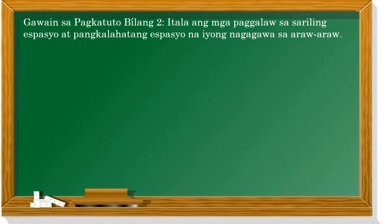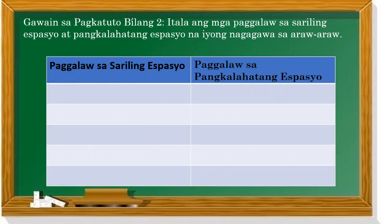Gawain bilang pangalawa: itala ang mga paggalaw sa sariling espasyo at pangkalatang espasyo na iyong nagawa sa araw-araw. Magkakaiba ang ating mga galaw dito. Pwede, halimbawa: pagwawalis ng pasulong, paglalakad ng patagilid, pagtakbo ng patalikod, pagtakbo sa sariling pwesto. Ito, paggalaw sa pangkalatang espasyo: pagtakbo ng malayuan, ng pataas — ibig sabihin, umaalis ka sa pwesto mo. Ang paggalaw sa sariling espasyo at pangkalatang espasyo ay kilos locomotor at di-lokomotor. Ang kilos locomotor ay yung umaalis. Ang kilos di-lokomotor ay hindi umaalis sa pwesto.